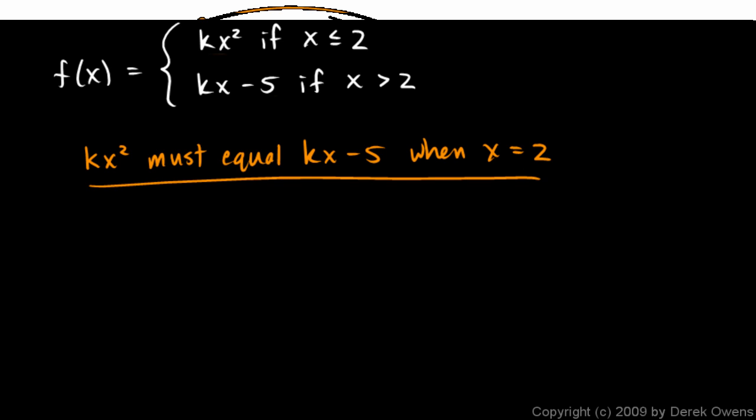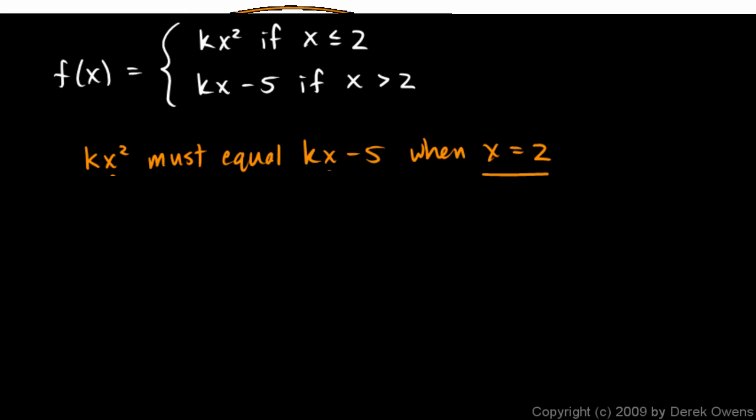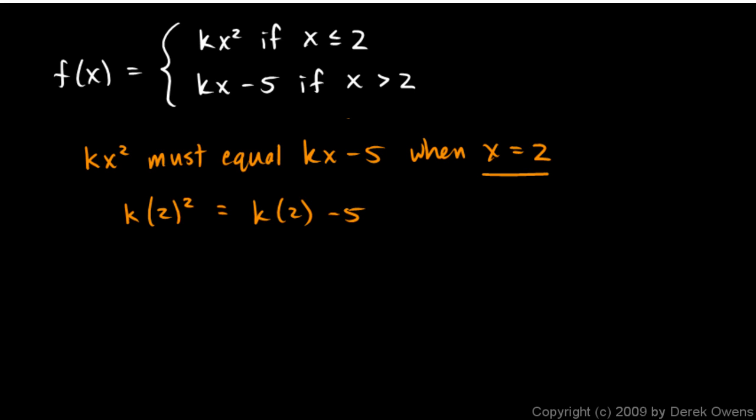And so this can be translated mathematically into an equation just by taking an x value of 2 and putting it in for x right there. And you can often skip writing this, but you should at least think it and then write this. k times 2 squared, I just put in an x value of 2 right there for x. k times 2 squared equals k times 2 minus 5. I just put in an x value of 2 for x right there.